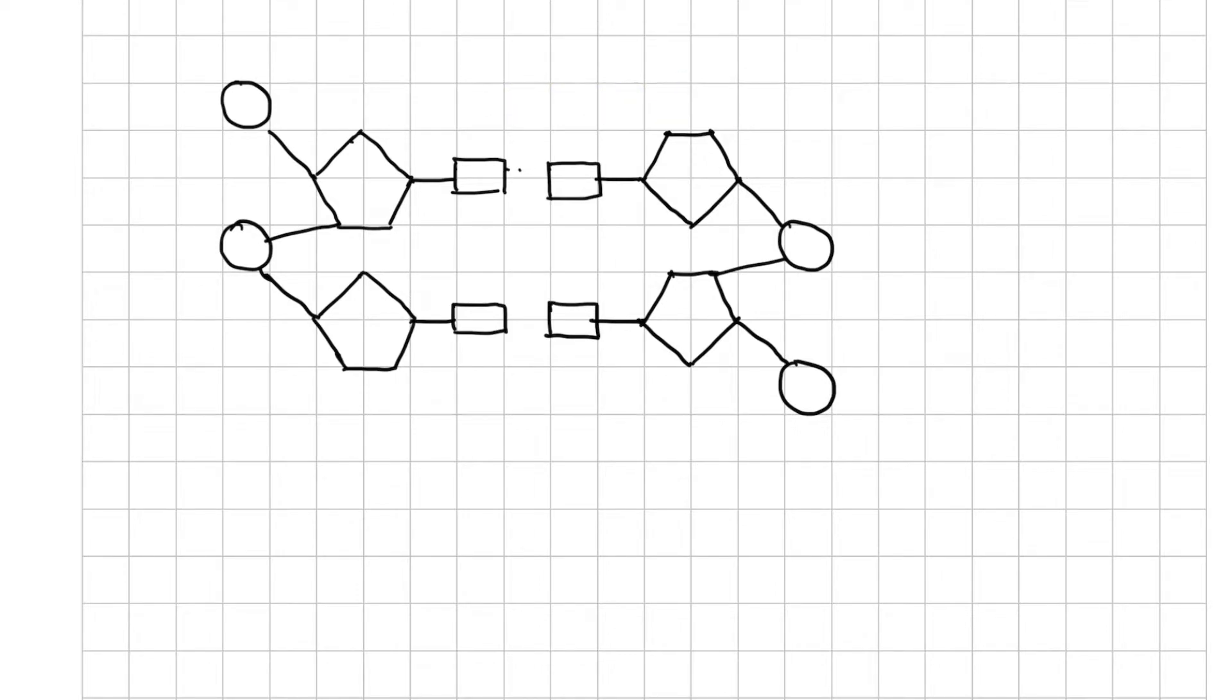Hydrogen bonds connect the strands. That is, between the nitrogenous bases there are hydrogen bonds. Draw two dotted lines between the first pair of nucleotides and three dotted lines between the other.